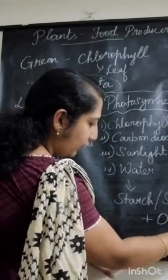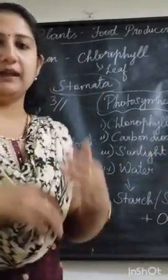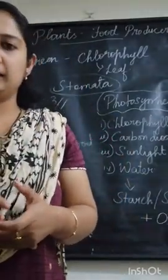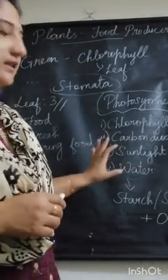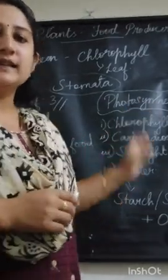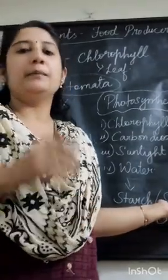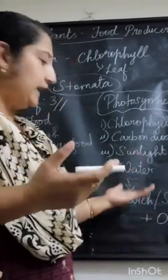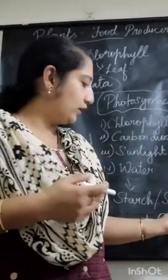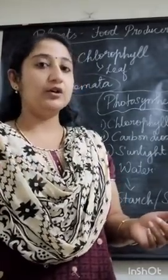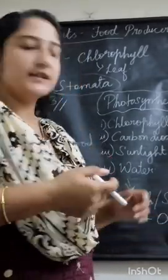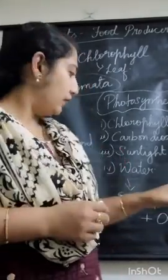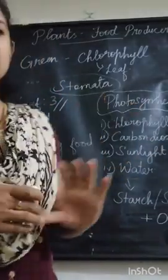Another byproduct of photosynthesis is oxygen. That oxygen is given out through the stomata, which we then breathe in. This sugar is stored in different plant organs — in fruits like mango, in leaves like spinach, in stems like sugar cane, and in roots like carrot and radish.